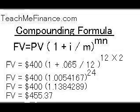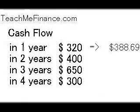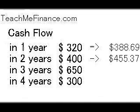That comes out to 1.0054167 to the power of 24, because there will be 24 compounding periods. That equals 1.1384289. Multiply that by $400, which was the amount of the payment, and that comes out to $455.37, which means that at the end of the fourth year — four years from today — the payment you will receive two years from today will grow to $455.37.